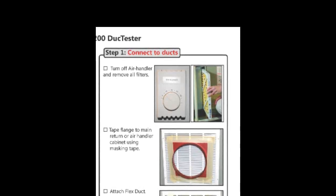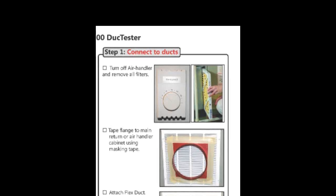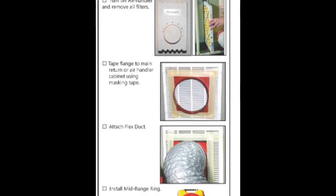We also need to remove all the air filters and close the filter compartment. Now we're ready to go to the next stage which is taping the flange to the main return.